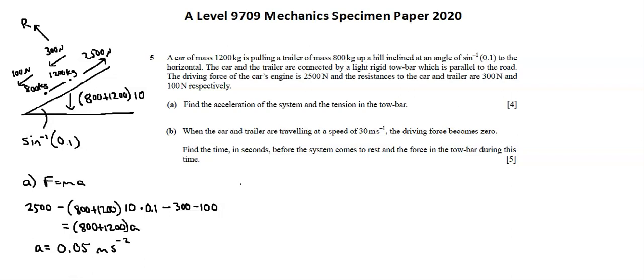To calculate tension, I can either use a calculation relating to the lead particle or the following particle. Sometimes we need both formulae because we're solving for two variables. In this case, we have all values except for tension, so I'll use the formula for the following particle, the trailer in this case. For the following particle, we start with tension and we subtract forces. The opposing forces for the trailer are the resistance of 100 as well as the effect of gravity, 800 times 10 times the sine value of 0.1 equal to mass times acceleration, 800 times 0.05.